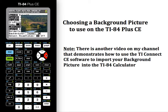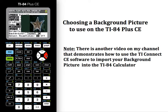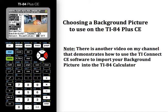I believe there are 10 different slots — you can keep 10 different pictures in at any given time. These images right here are ones that have come on the calculator, and now these are some pictures that I have imported in. I left image 8 blank right here — this is what it would look like if you did not have any pictures stored in a particular slot.